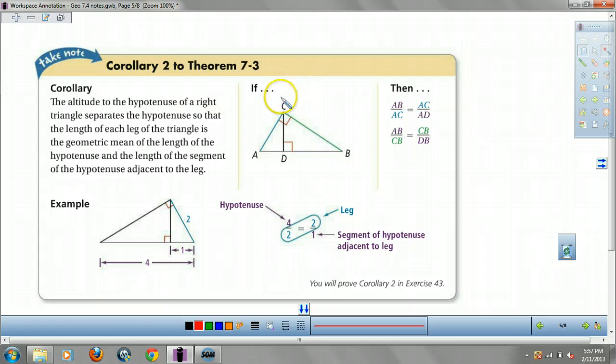Another corollary. The altitude to the hypotenuse of a right triangle separates the hypotenuse so that the length of each leg of the triangle is the geometric mean of the length of the hypotenuse and the length of the segment of the hypotenuse adjacent to the leg. What? I don't know either, guys. But basically what it says is, the shortest leg on your hypotenuse is equal to the geometric mean of its own hypotenuse and the shortest leg of the small triangle. If you forget this theorem, just draw out your triangles and use similar triangles like we've been doing this whole time. Don't be a fool.